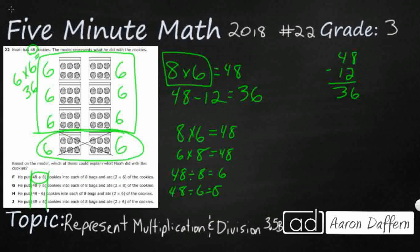It looks like this 48 divided by eight actually works, because he put the cookies into bags of six, which is what I have right here. He put 48 divided by eight cookies into each of the eight bags — there were originally eight bags. Then he ate some. That's what this X represents — he's eating something. Two times six: he ate 12, and two times six does make 12. There are two bags of six each.